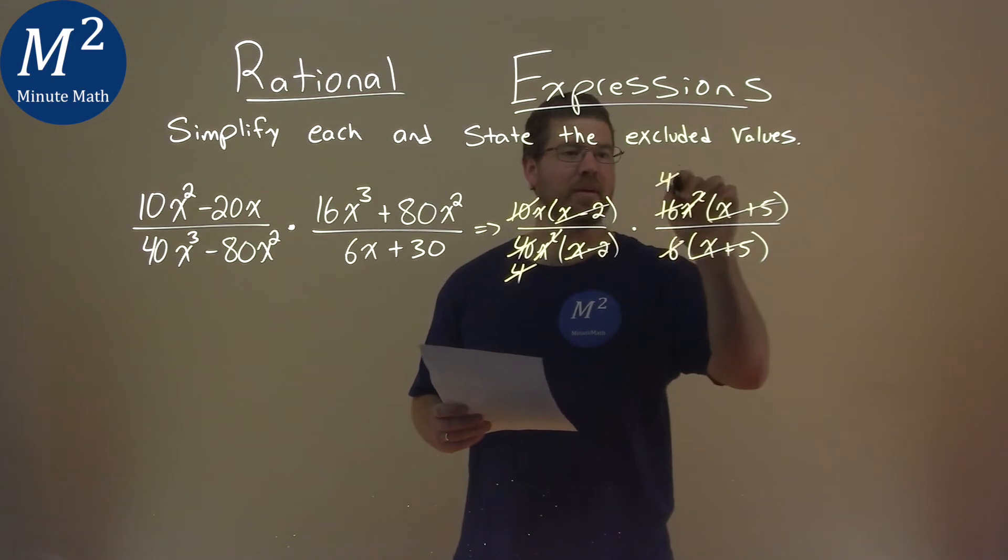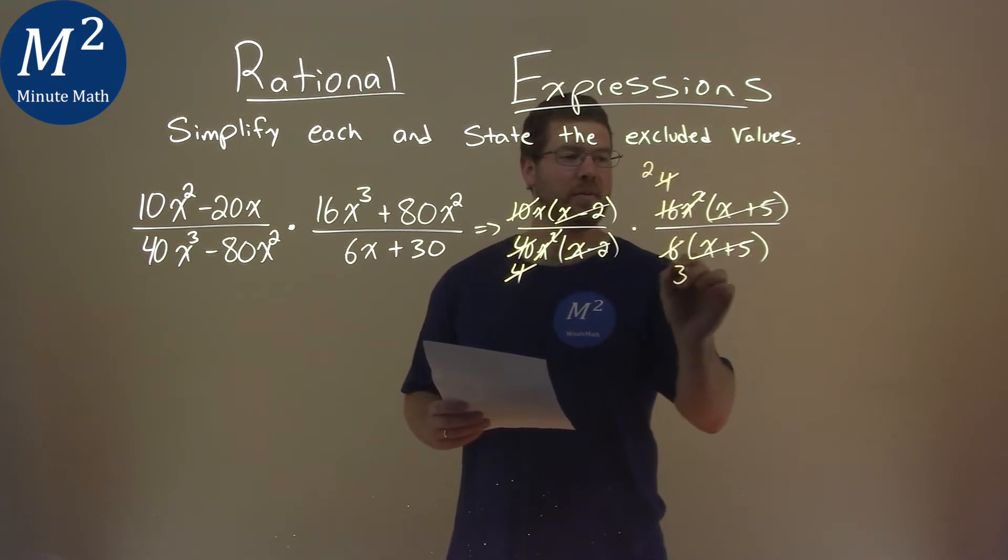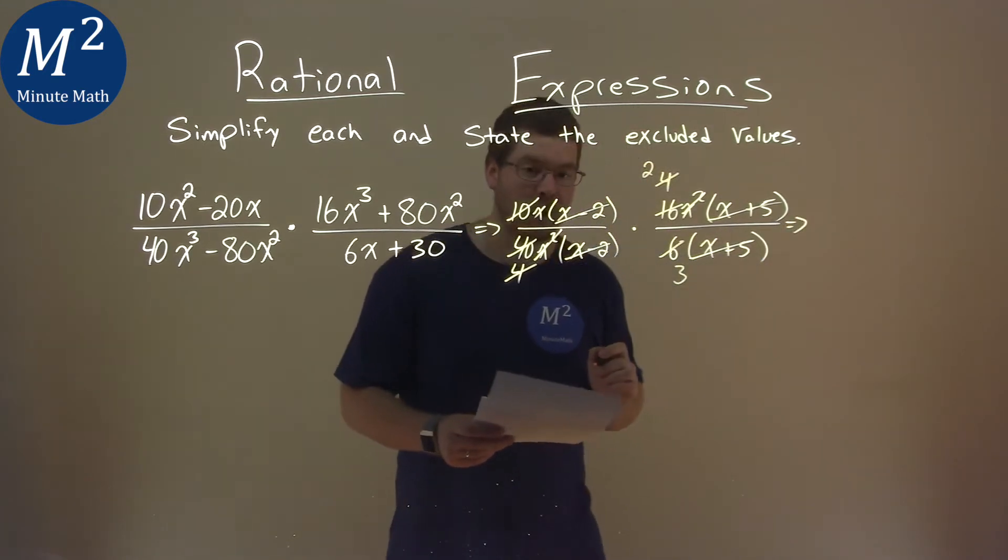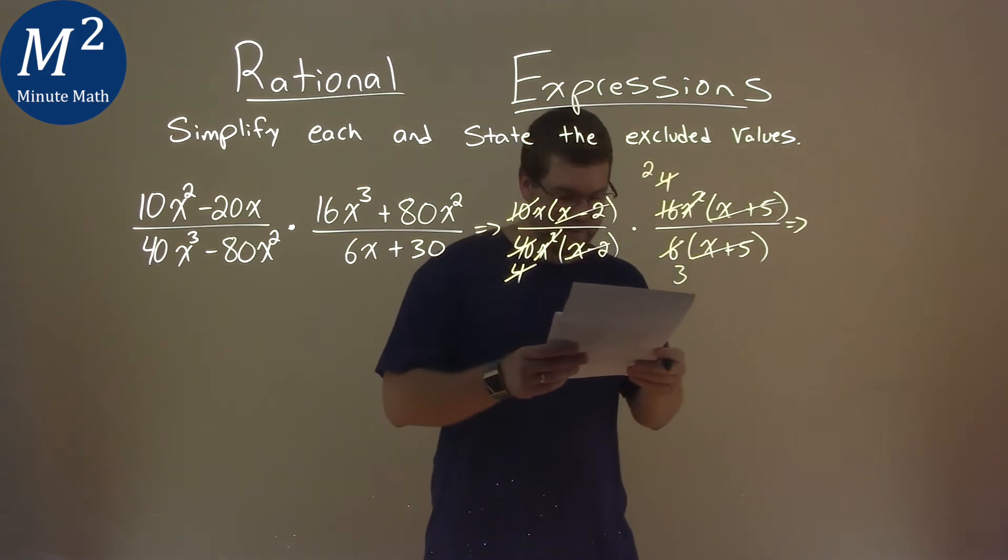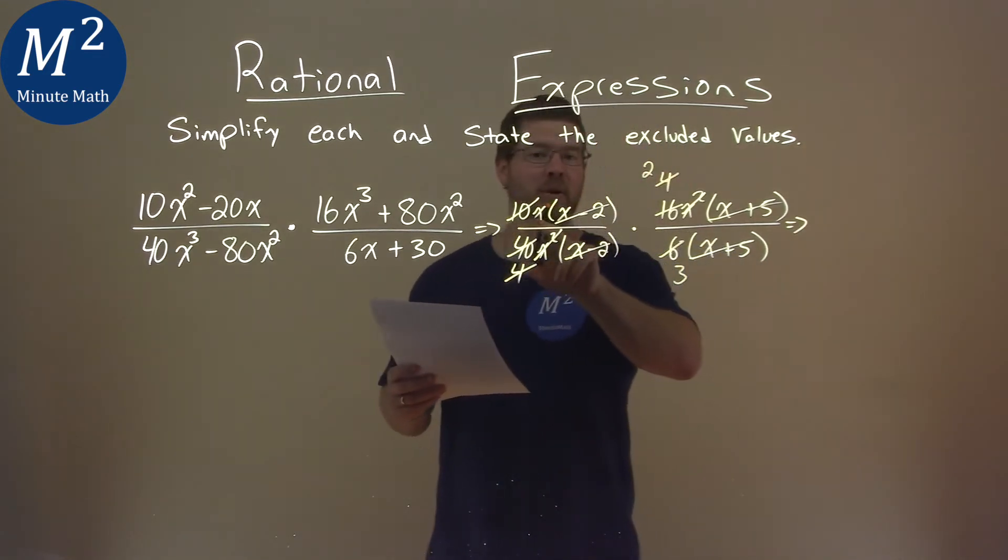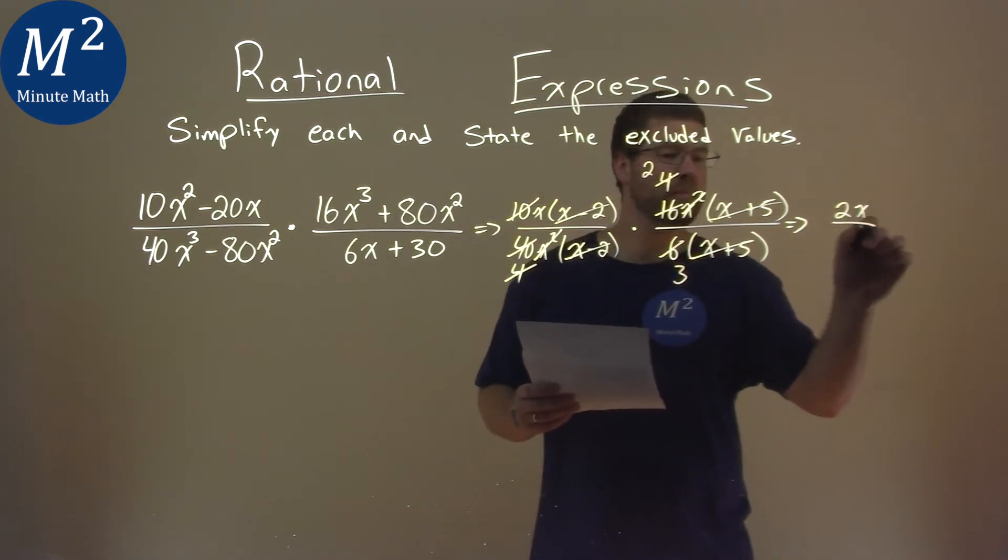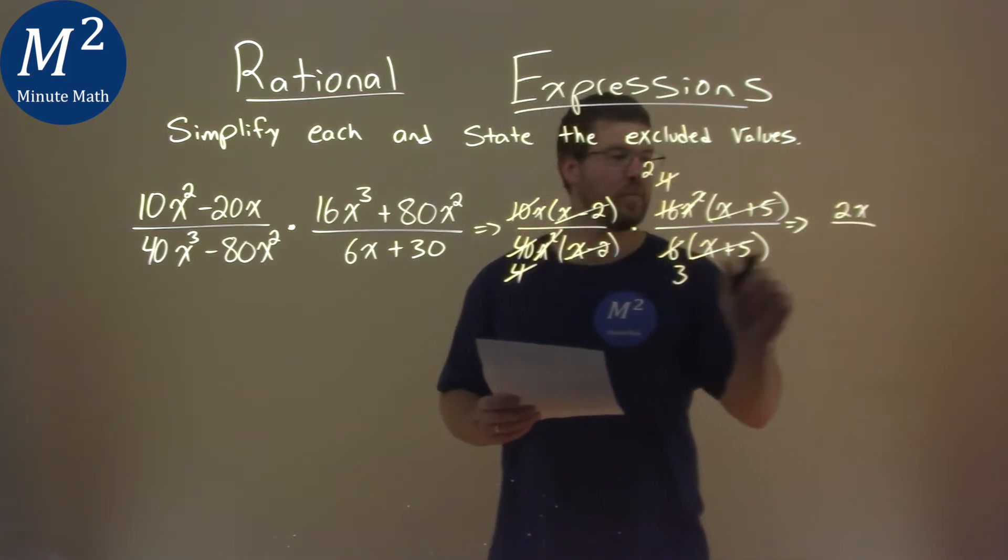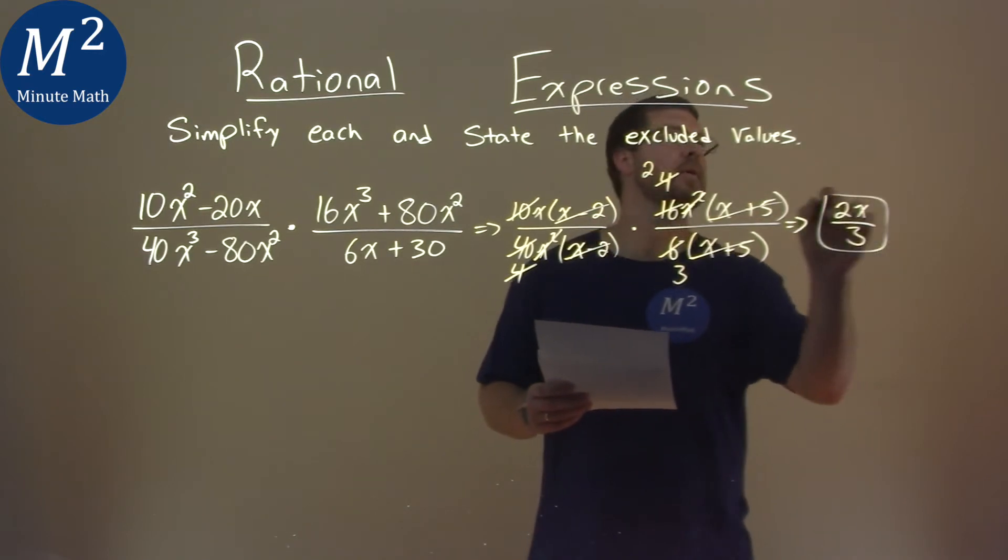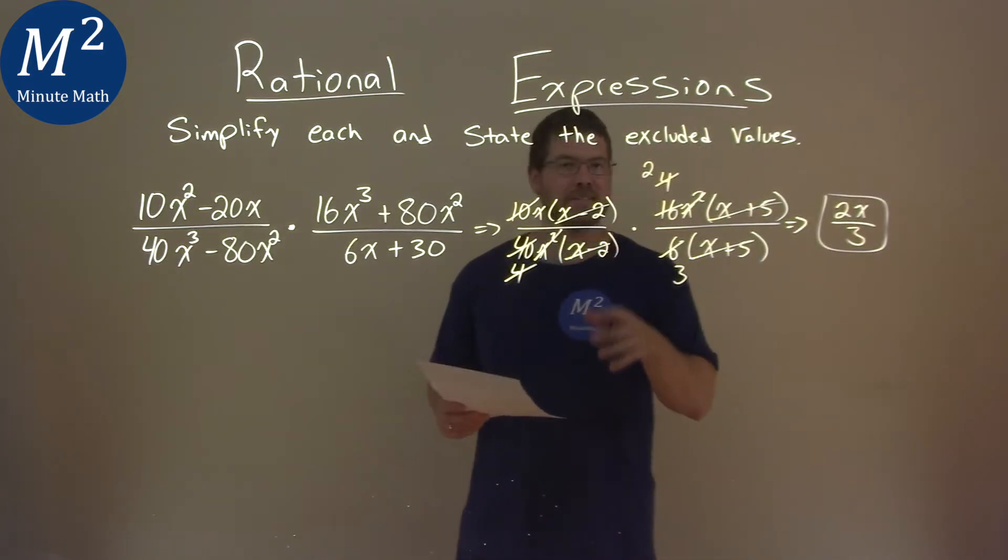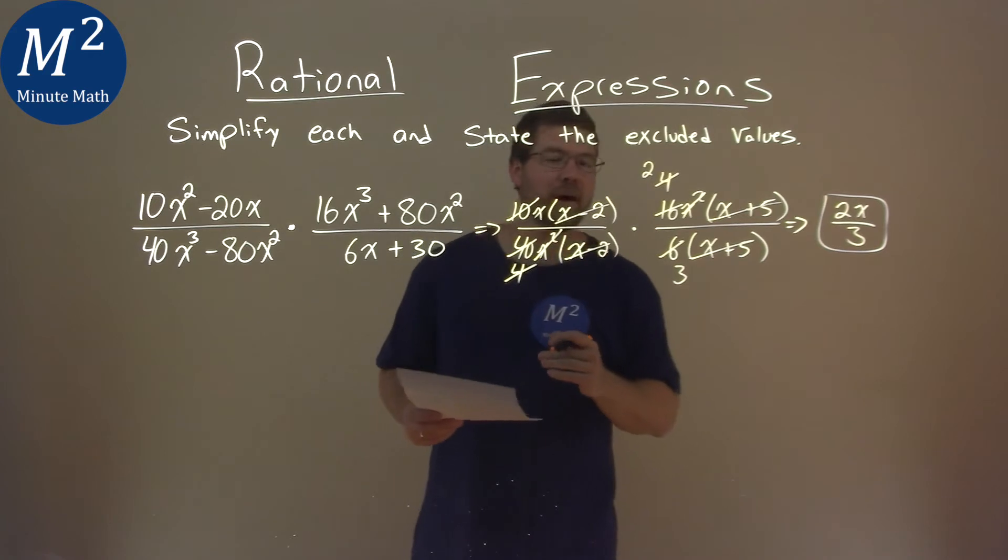And now we have 4 over 6. So 2 goes into both of them. So this is a 2, and this is a 3. So after all of that, all of that, can't forget it, we have this one little x here in the numerator, and that 2, so don't forget that x. So we have 2x here over denominator. The only thing left was that 3. And so our simplified expression after all that is just 2x over 3.